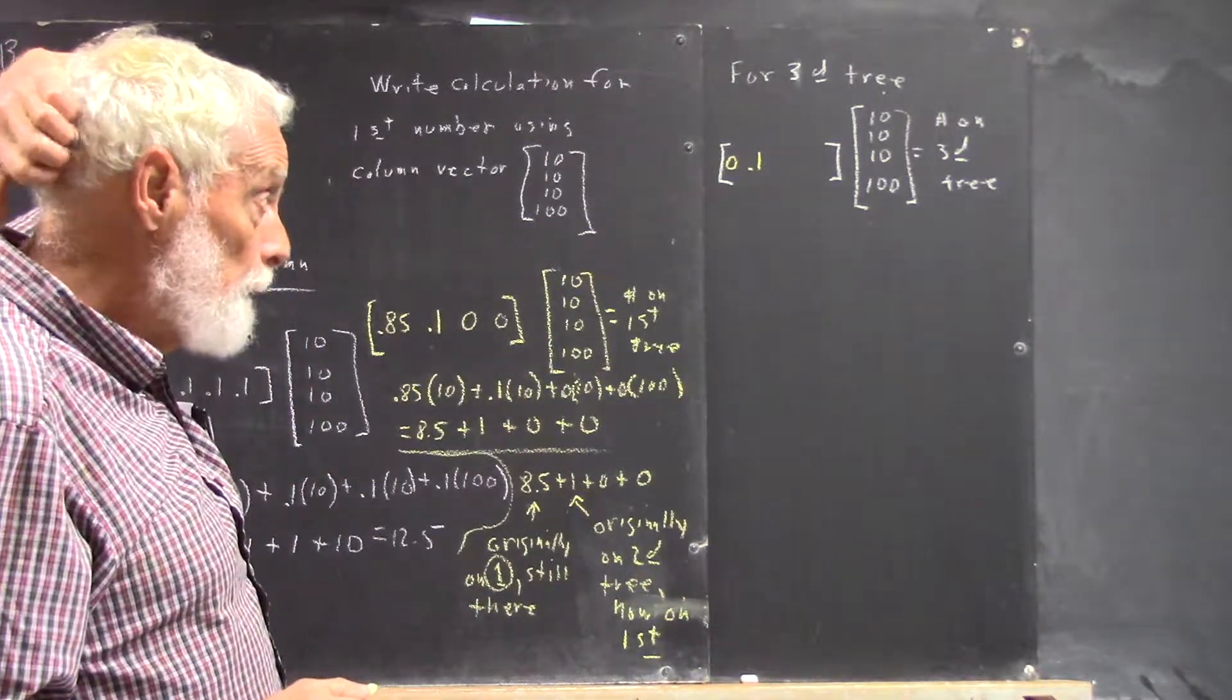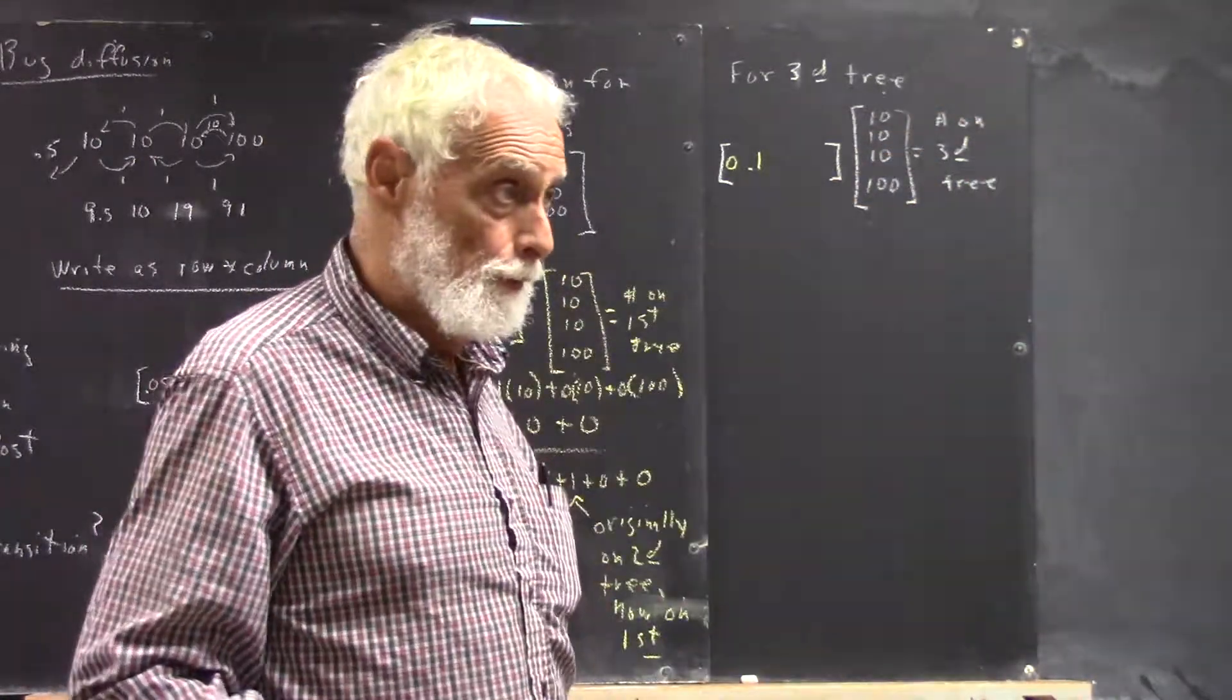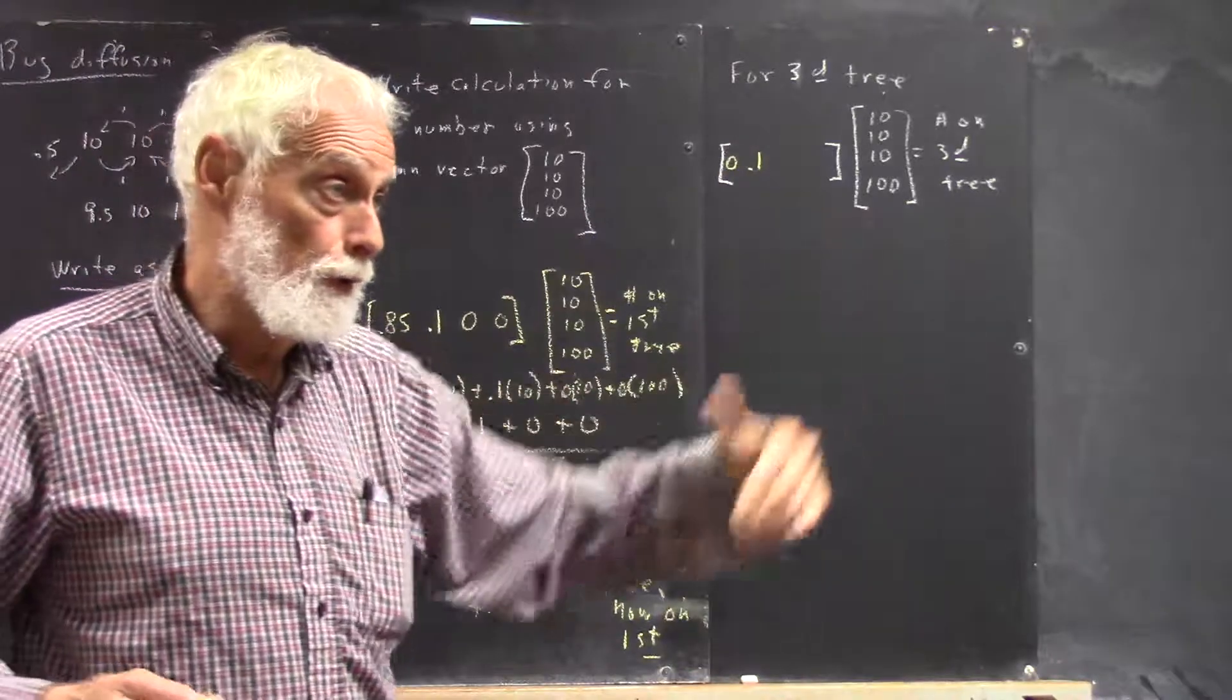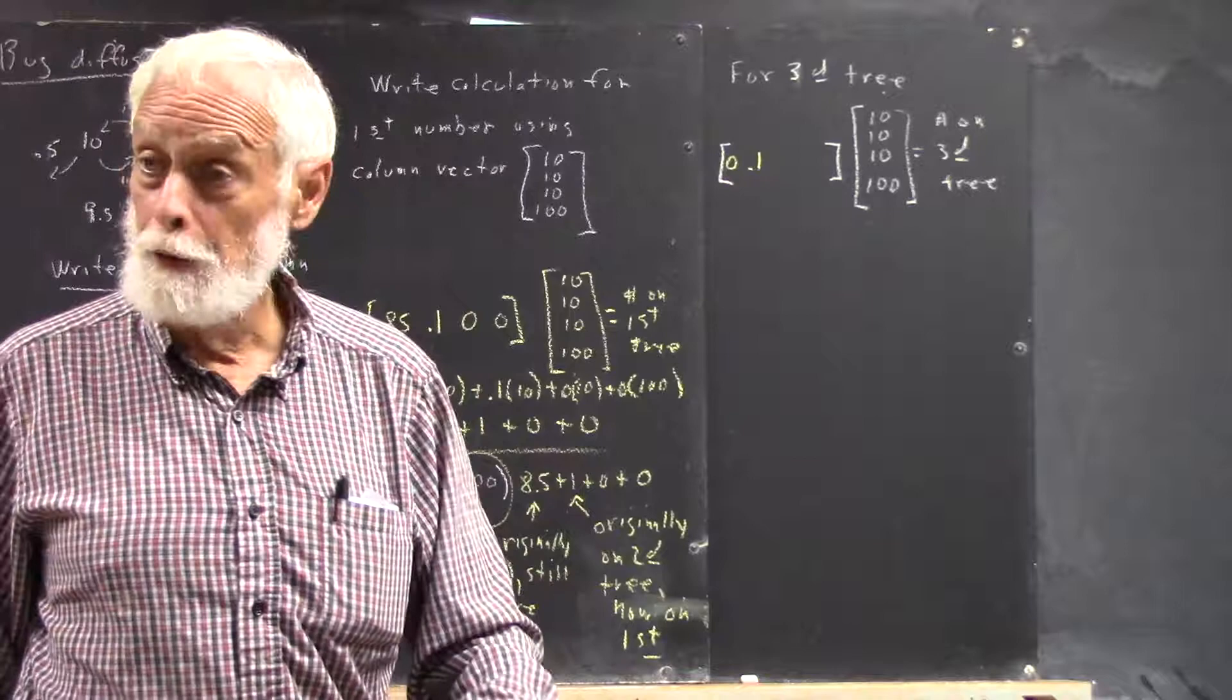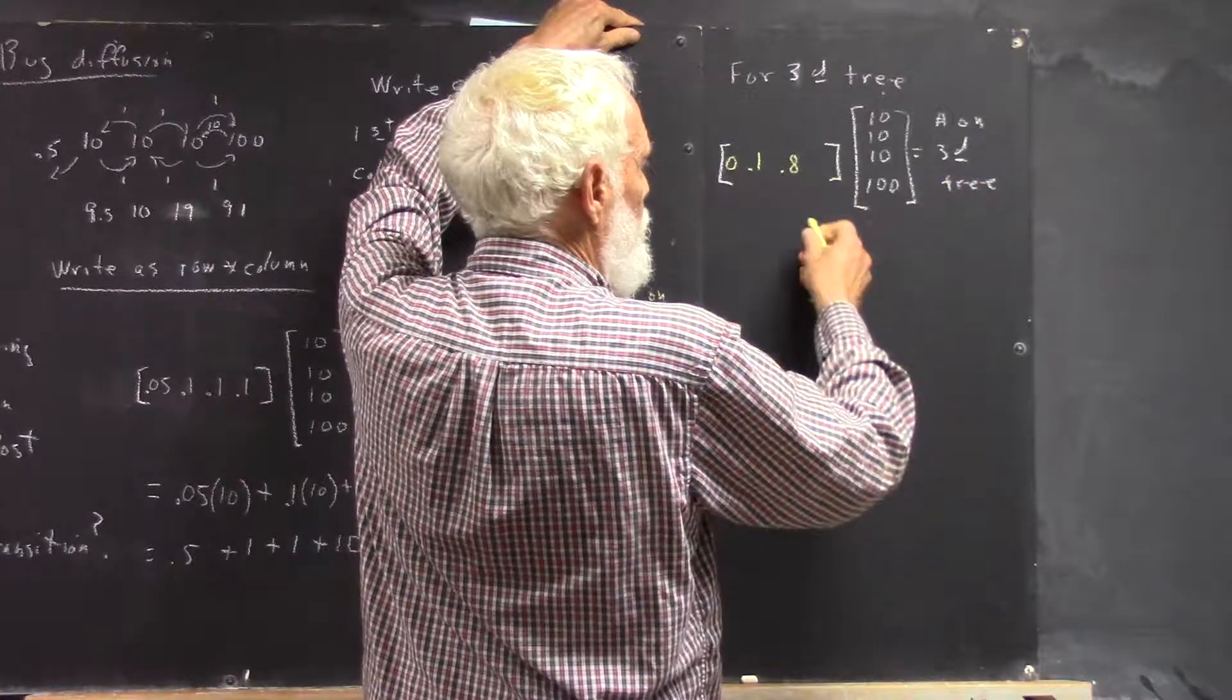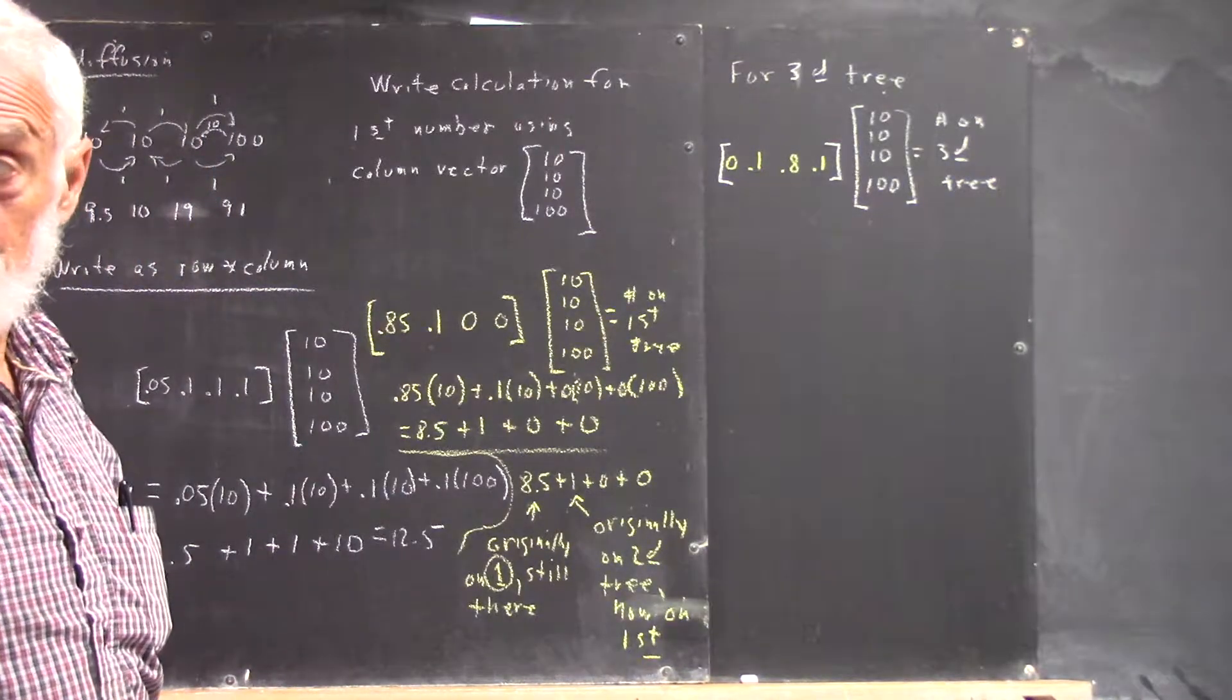And then the number on the, what do we multiply by the number on the third tree to contribute to the next number on the third tree? Well, 10% of the bugs on the third tree are going to go to the second tree. 10% are going to go to the fourth tree. So 80% of them are going to stay on the third tree. So we have 0.8. And then on the fourth tree, 10% of those are going to go to the third tree.